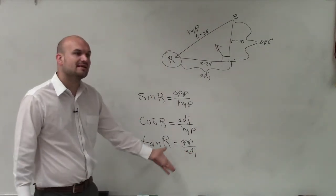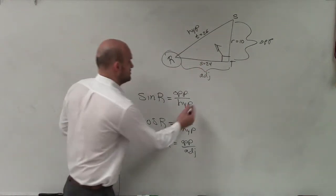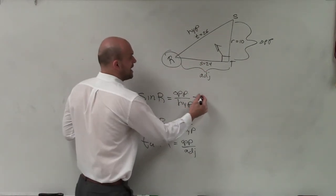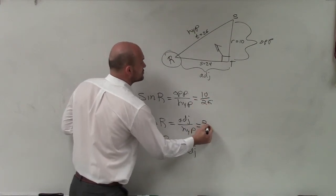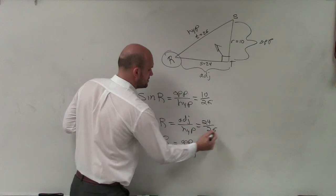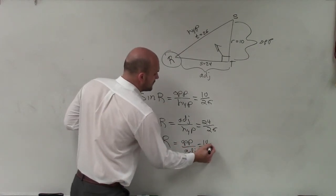So now I just take what are those side lengths. Well, thankfully, at the beginning I labeled them, so I just plug them in. So that is equal to opposite, which would be 10 over 26. This is 24 over 26. And tangent is going to be 10 over 24.